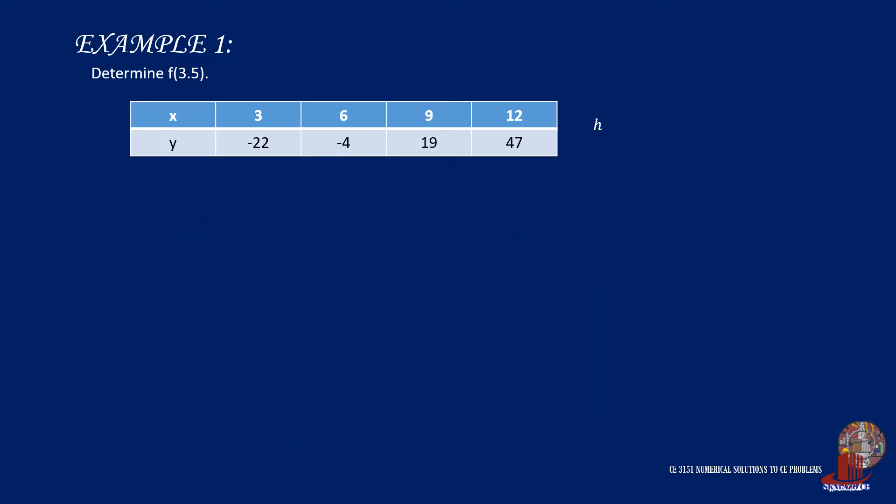Check x interval. H is 3 for this example. So r can be computed, and that would be the x of the value required. And we are looking for 3.5 less x-naught, which is the first leading forward difference all over h, which is 3. r will turn out as 0.1667.